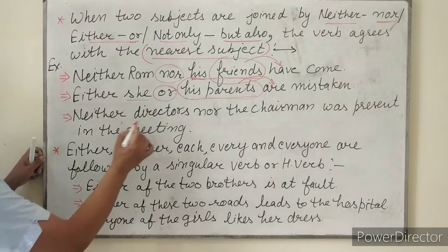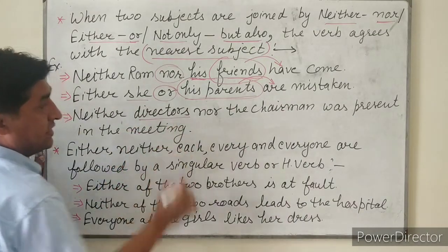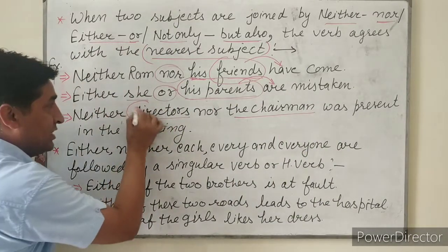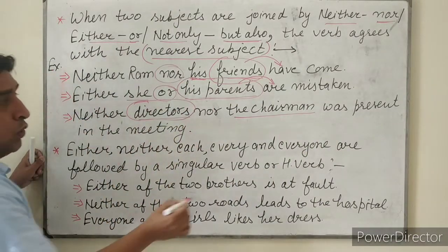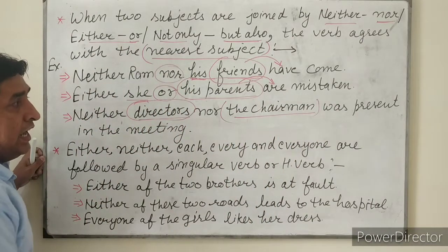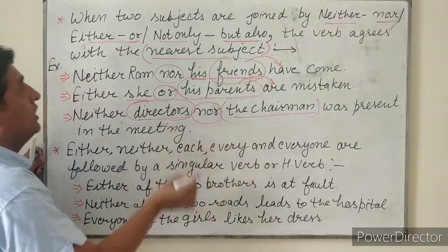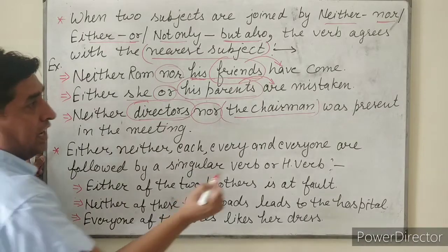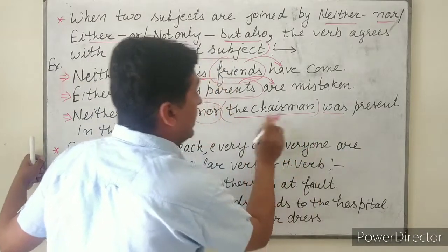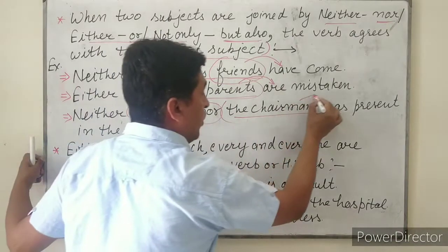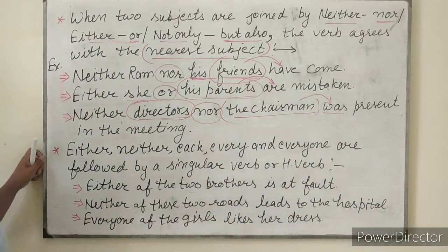'Are mistaken.' Next example: 'Neither directors nor the chairman...' — यहाँ 'directors' plural में है, लेकिन 'nor' के बाद 'the chairman' singular है। तो verb या helping verb 'chairman' के according लगेगी। So: 'Neither directors nor the chairman was present in the meeting.'